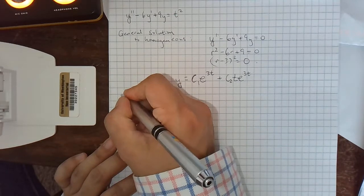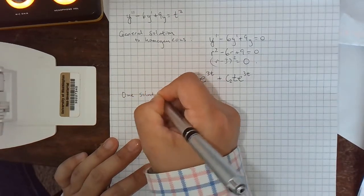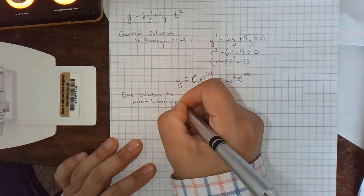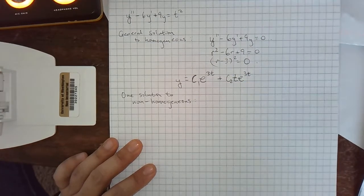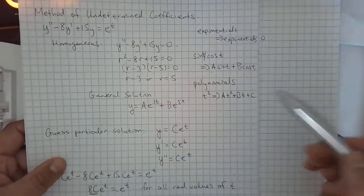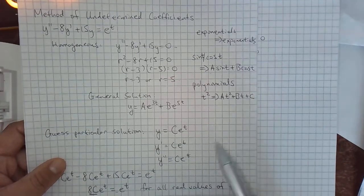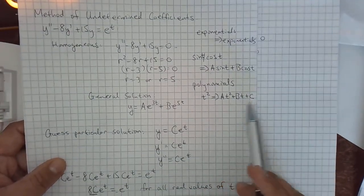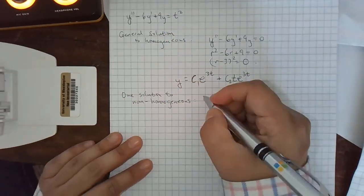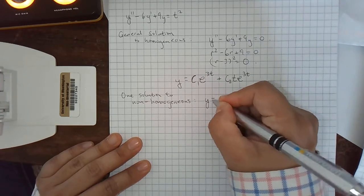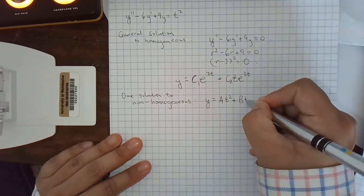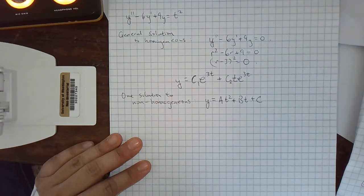And now we need one solution to the non-homogeneous equation. We call this a particular solution sometimes. And we're going to guess something. So our instructions, which we talked briefly about last time, we said exponentials go to the same exponential. Sine and cosine go to some combination of sine and cosine. Polynomials are going to go to the most general polynomial of the same degree. So this is degree 2. It's a quadratic. So I'm going to guess a general quadratic. So a t squared plus b t plus c, the most general degree 2 polynomial.